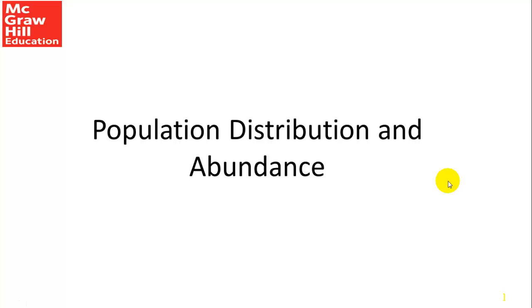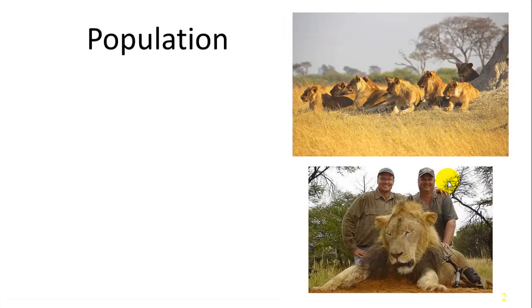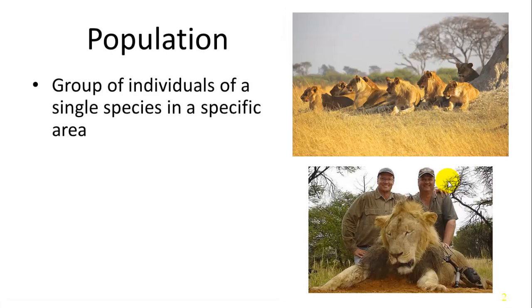We're talking today about populations, specifically distribution and abundance. A population is a group of individuals of a single species in a specific area, usually some sort of landscape. It could include a pride of lions in a specific area of the Serengeti, or multiple prides of lions within a defined area — essentially a group of the same species within a specified area.